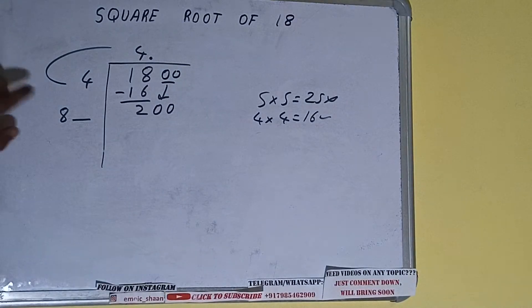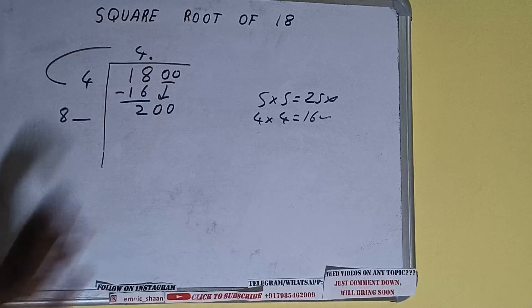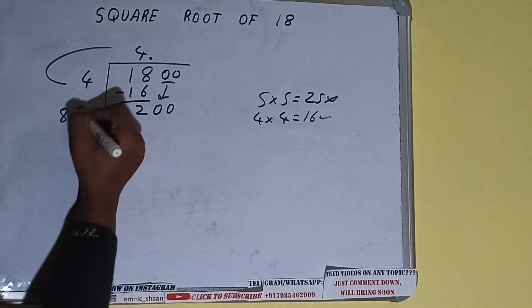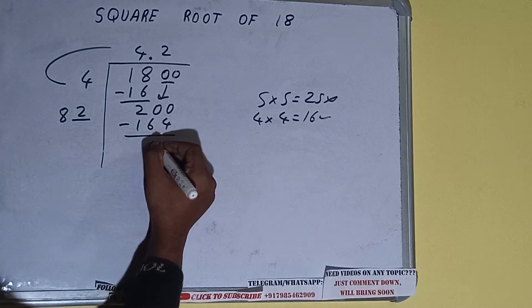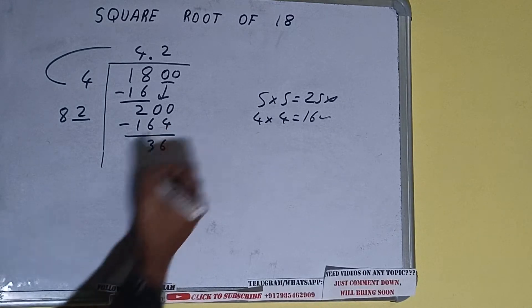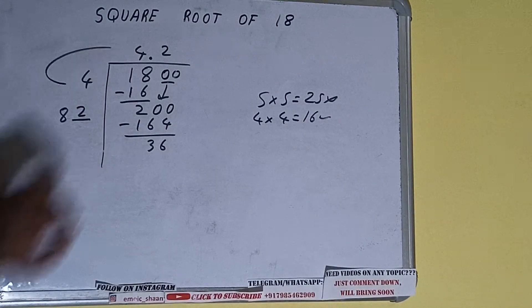Now whatever number we write here, we have to write here also. So we can write 2 here and 2 here, 164. Subtract and 36 will be left.